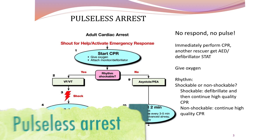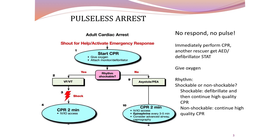This is the pulseless arrest algorithm based on AHA guidelines. If the patient has no response and no pulse, immediately perform CPR while another rescuer gets an AED or defibrillator. Give oxygen to the patient. Once a rhythm is available, decide whether this is a shockable or non-shockable rhythm. If it is shockable, give defibrillation then continue with high-quality CPR. If it is non-shockable, continue with high-quality CPR.